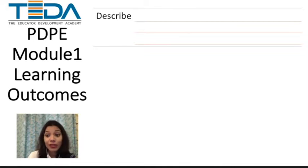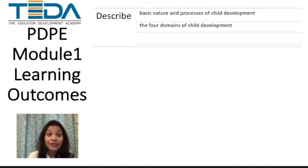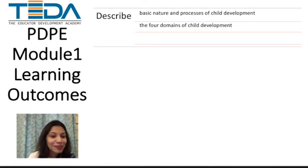So to start with the basic nature and processes of child development, then the four domains of child development — physical, cognitive, social, and emotional. People always wonder where language fits in. Language is part of the cognitive domain.